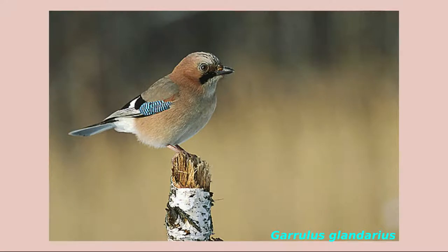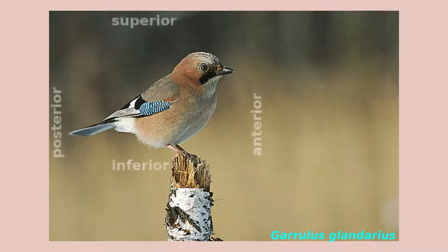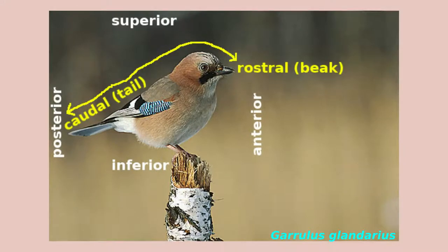Birds are a lot like fish, except they swim through the air and don't have scales. There are two additional anatomical terms which are best explained in birds. In Latin, tail is cauda, and towards the tail is called caudal. In birds, rostrum is beak, and towards the beak is rostral. So the axis between the beak and the tail is rostro-caudal. These terms are important when we get to humans. If you need to revise these terms, take a break now.